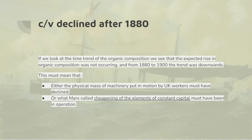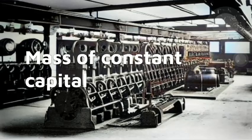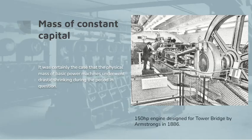To see which explanation is more plausible, we have to look at what made up constant capital — what Marx means by the mass of constant capital in a very physical sense: the mass of machinery being operated by each worker. It was certainly the case that some machines were greatly miniaturised during those 20 years. There were huge improvements in the miniaturisation of motive power. In 1886, the state-of-the-art power source was a steam engine which operated Tower Bridge — compressing the water which operated the hydraulic rams. It was a 150-horsepower steam engine built by Armstrongs in the mid-1880s.